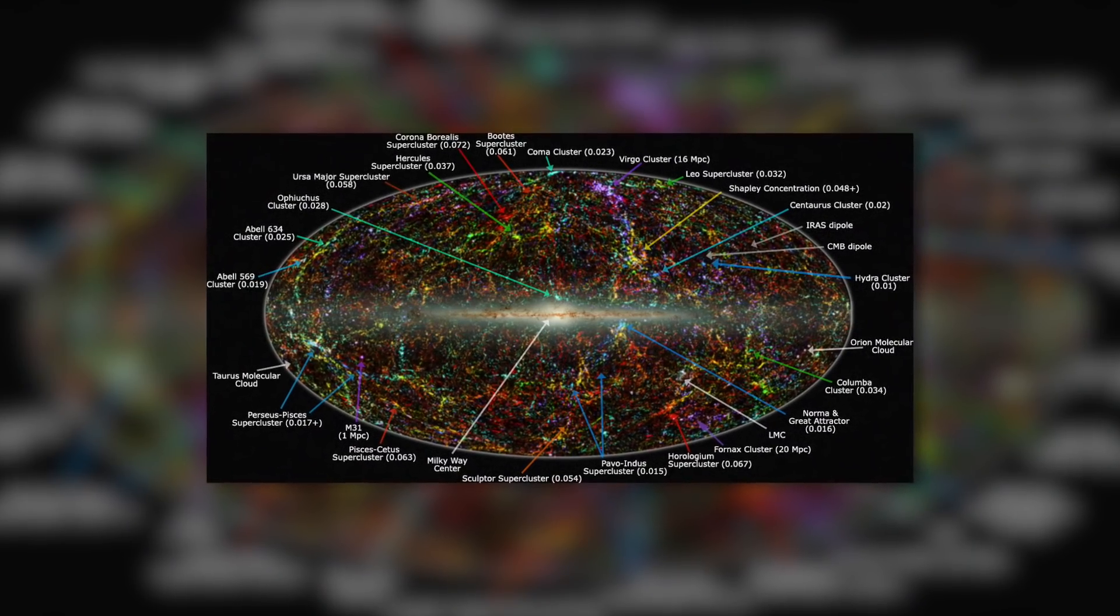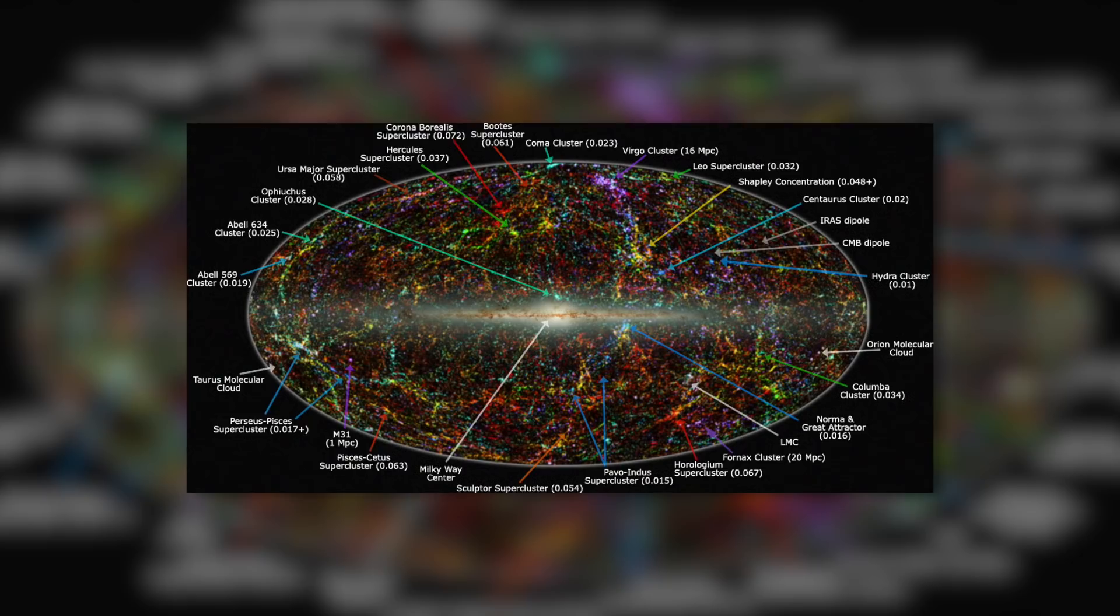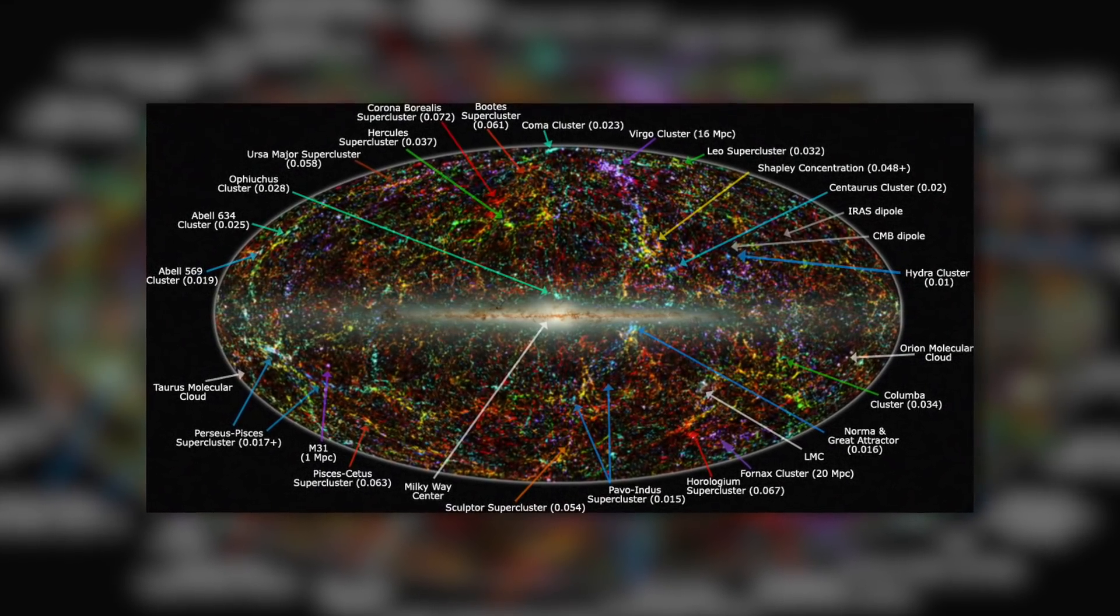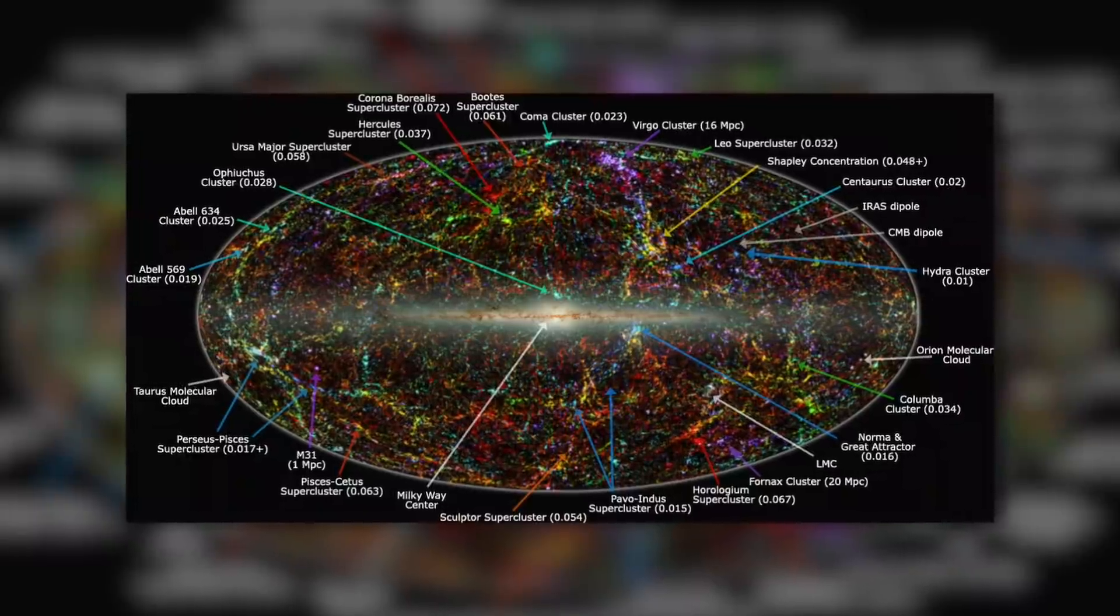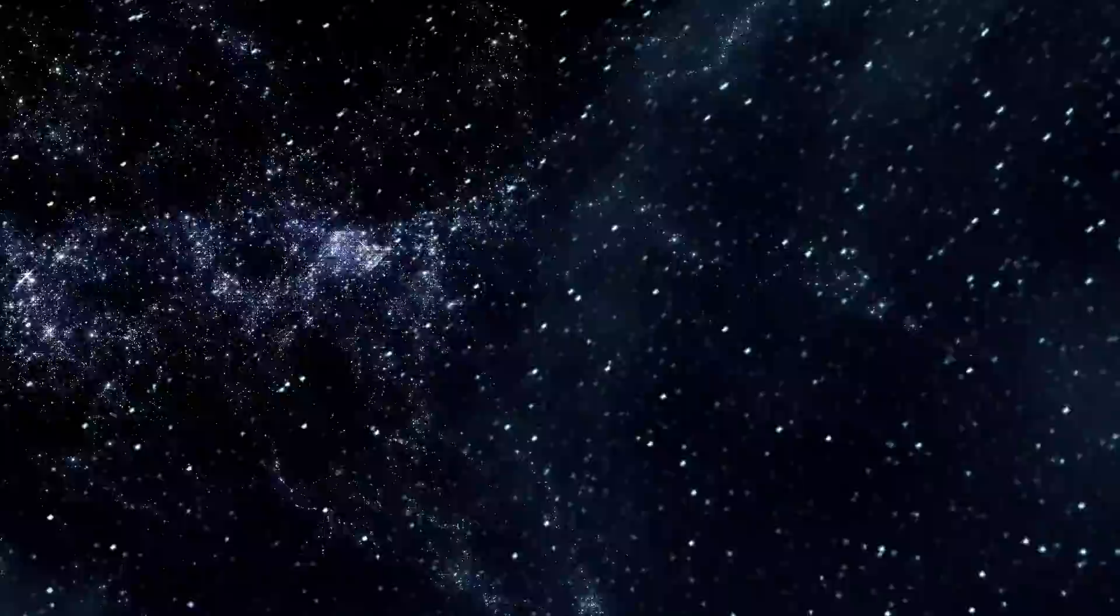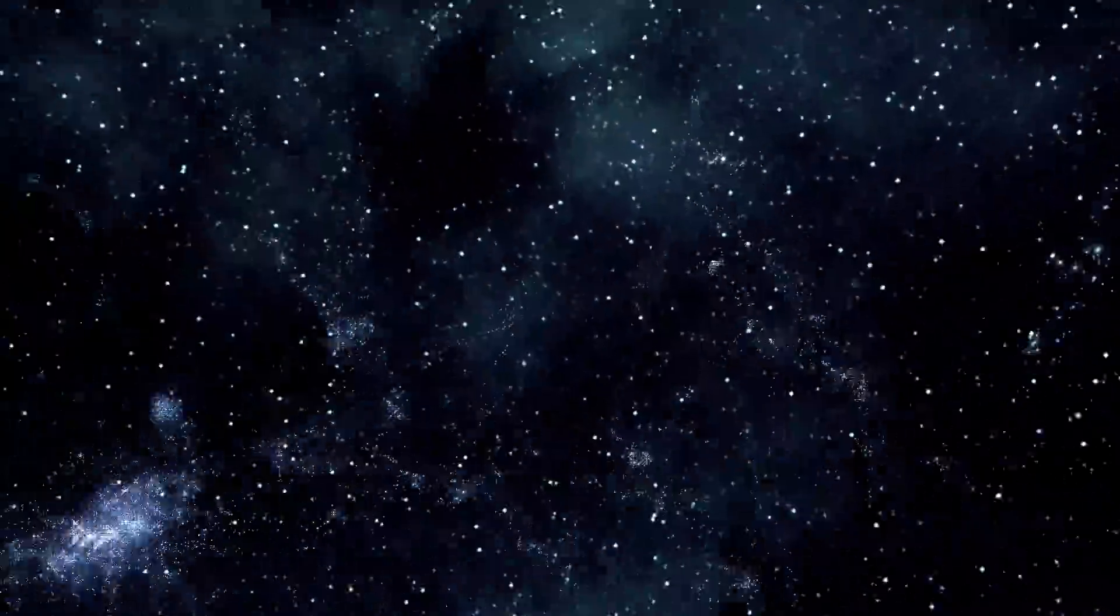Some time ago, during their work, experts came across a mysterious object in the Norma cluster of galaxies, which was henceforth christened the Great Attractor. The massive structure moves through space at a speed of 320,000 kilometers per hour.